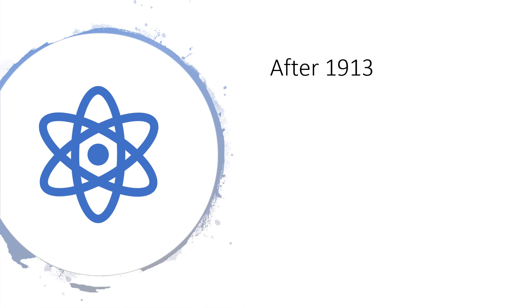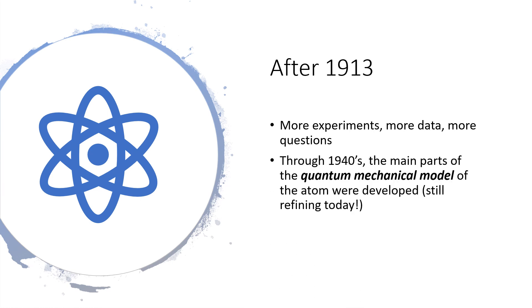After 1913, a lot more work was done in trying to figure out the structure of the atom. There were a lot more experiments, a lot more data, a lot more questions. Through the 1940s, the biggest parts of the quantum mechanical model of the atom were developed. We're still working on it today. As new computational techniques become available, they get applied to solving the basic equations of quantum mechanics. So it's still an active area of research.